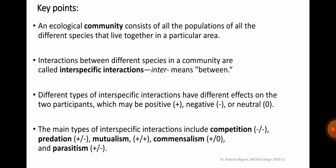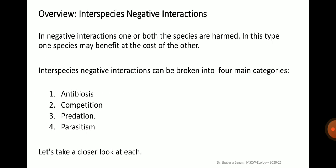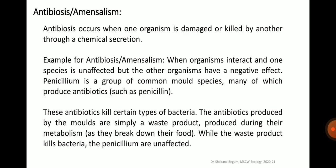Now let us talk about the negative interspecific interactions: antibiosis, competition, predation and parasitism. In negative interactions, one or both species are harmed. In this type, one species may benefit at the cost of the other. Let us take a closer look at each of these types of negative interspecific interactions. The first being antibiosis.